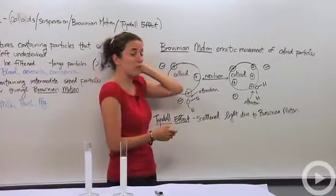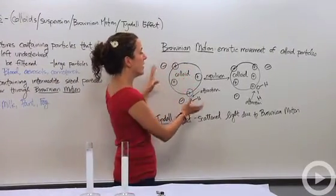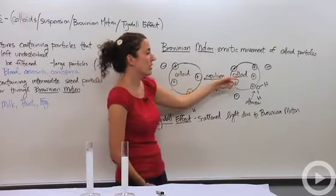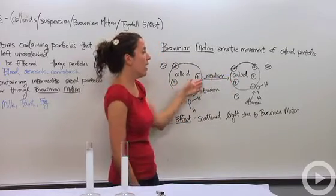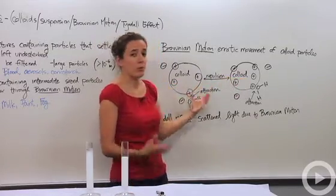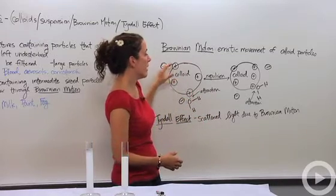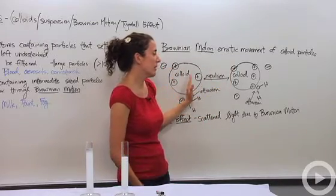Brownian motion is the erratic movement of colloid particles. Take this picture for example. We have our two larger colloidal particles, like they could be proteins or whatever. They're typically repulsed by each other.